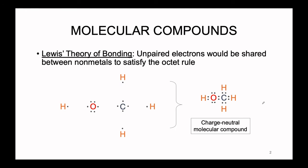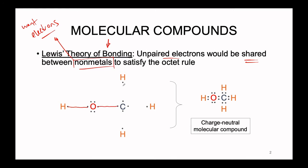Molecular compounds can be drawn or explained via Lewis's theory of bonding. According to Lewis's theory of bonding, all unpaired electrons in a molecule are going to end up being shared — specifically between non-metallic atoms, because non-metallic atoms want electrons due to their high effective nuclear charge and their high affinity for electrons. The way that we draw a molecule, according to Lewis's method, is that we draw a line between all of these unpaired electrons.